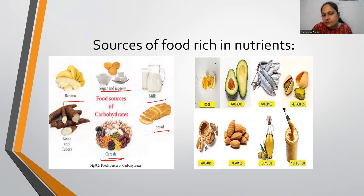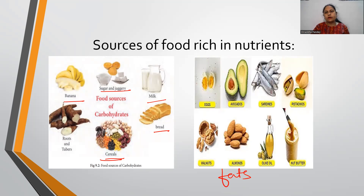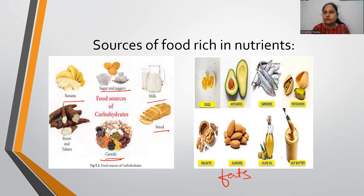For fats, we get them from eggs, avocados, sardines, pistachios, walnuts, almonds, and any oils such as groundnut oil, sesame oil, mustard oil, and sunflower oil. Butter, peanut butter, dairy butter, cheese, and ghee are also rich in fats.